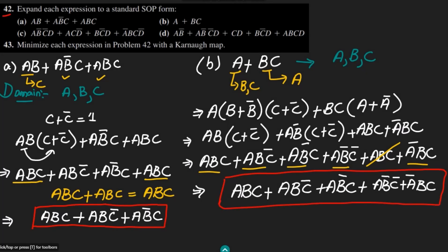This is the standard SOP form, and all domain variables a, b, c appear in each product term. That is the answer for part B. I will solve part C in the upcoming video — take care of yourself.